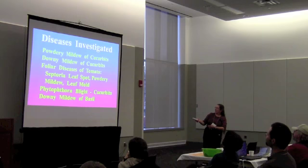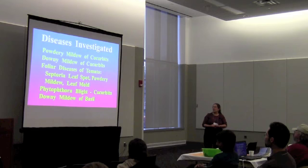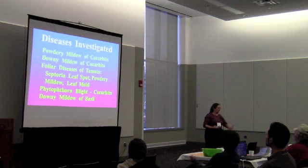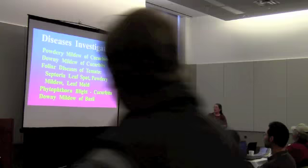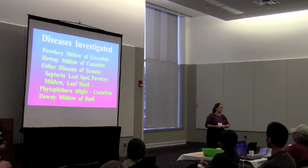The diseases I've looked at include powdery mildew and downy mildew of cucurbits, foliar diseases of tomato, Phytophthora blight in cucurbits, and most recently downy mildew in basil. All of my experiments use natural inoculum occurring in the area — I'm not artificially inoculating. I do have one research block where we allow Phytophthora blight to develop, so that's one where we've encouraged it in the soil.